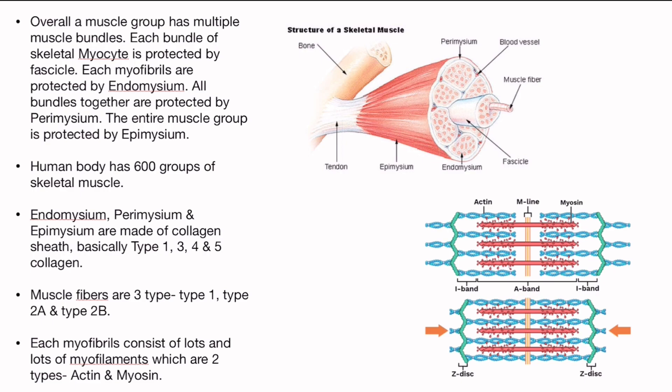Ek ek muscle bundle ke andar jitne saray muscle fiber hain — myofibril — yeh saray ke saray myofibril endomysium se ghire hue hain. Endomysium ek patla chadar hai. Alag-alag jo muscle bundle hain woh bhi ek chadar se ghire hue hain jisko hum kehte hain fascicle. Human body has 600 groups of skeletal muscles.